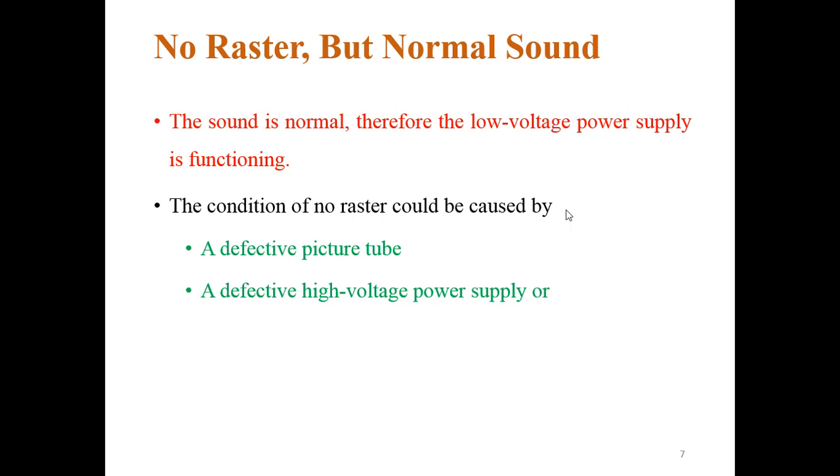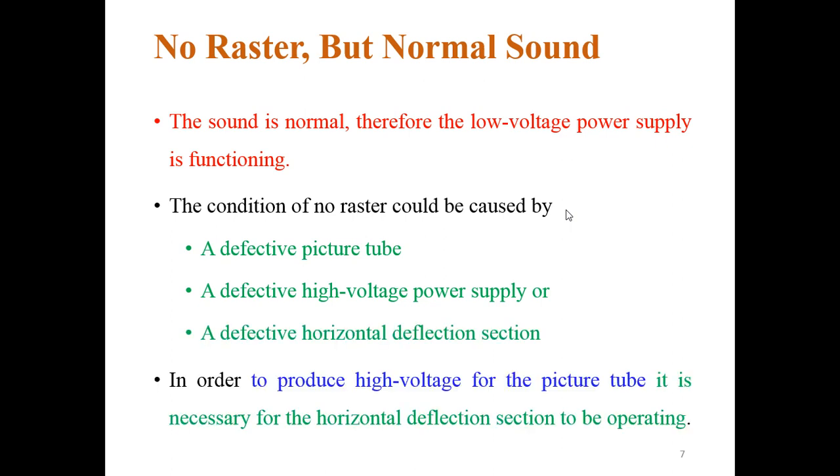a defective high voltage power supply, or a defective horizontal deflection section. The low power supply is working normally to produce high voltage power supply in the picture tube. It is necessary for the horizontal deflection section to be operating. As we can see on the block diagram of the TV receiver, the high voltage power is going just after the horizontal deflection.